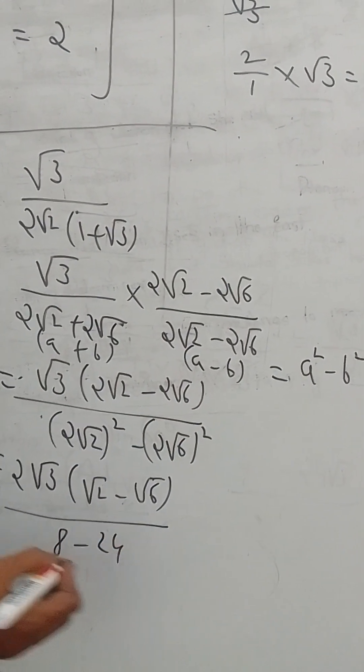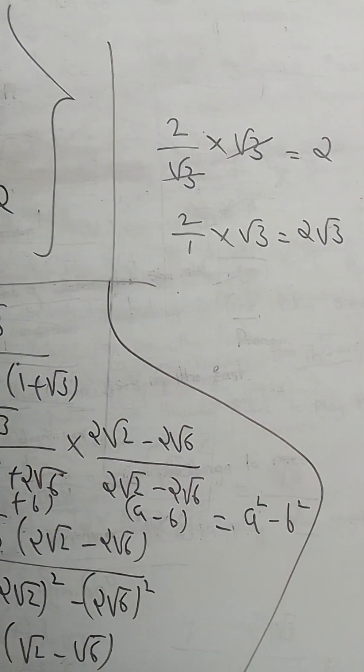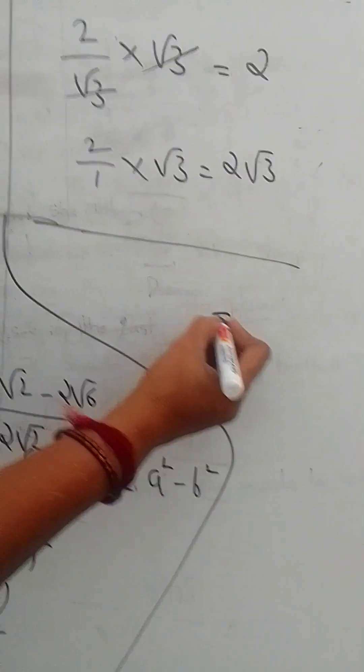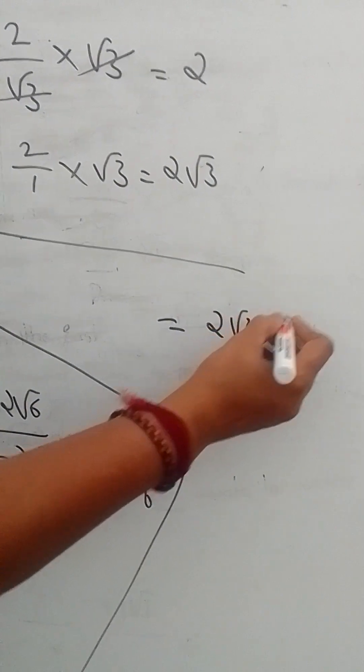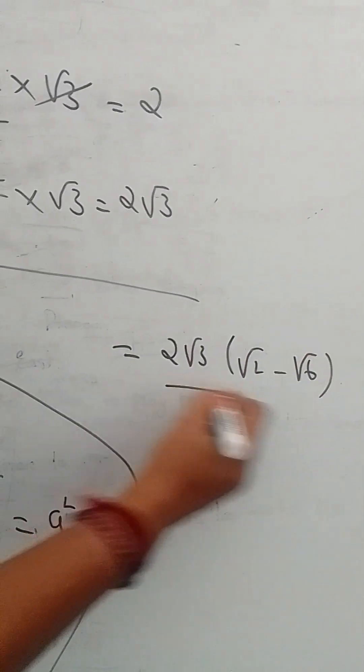This equals 2 root 3 into root 2 minus root 6 by 24 minus 8 is 16. Minus 16. Here bigger number sign is minus, minus 16.